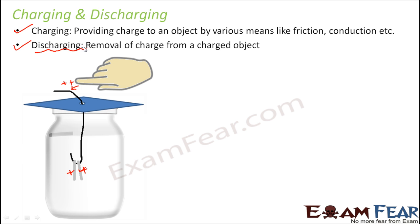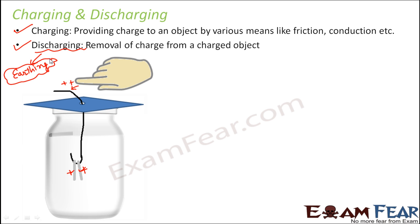This process is called discharging. Discharging is nothing but removal of excess charge from an object. Discharging is also termed as earthing or grounding. Whenever you touch any object with your skin, your body acts as a good conductor, so those excess charges get a path to get grounded or to reach the ground. That's how earthing happens and the object again becomes neutral.